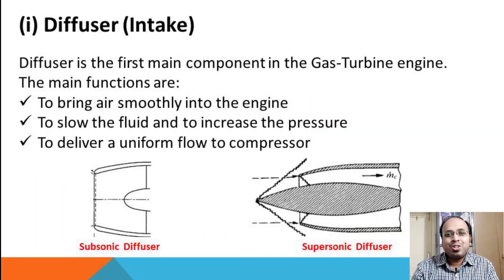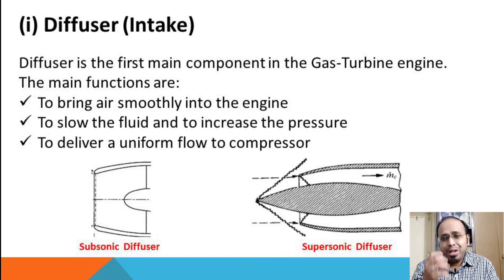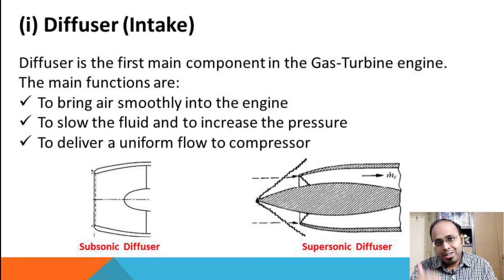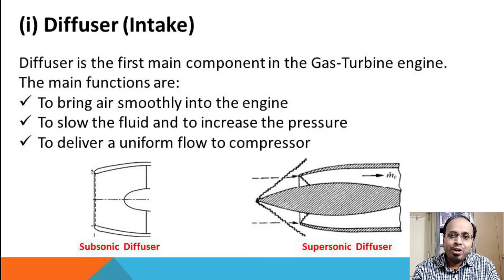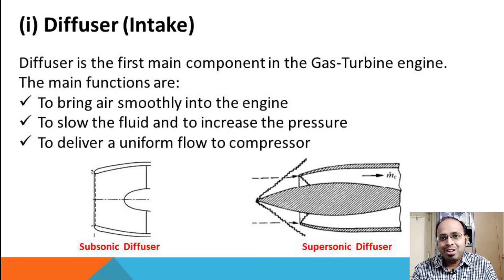The first component is the diffuser. The main function of the diffuser is to bring air smoothly into the engine, to slow down the fluid, increase the pressure, decrease the velocity of the flow, and to deliver uniform flow to the compressor.